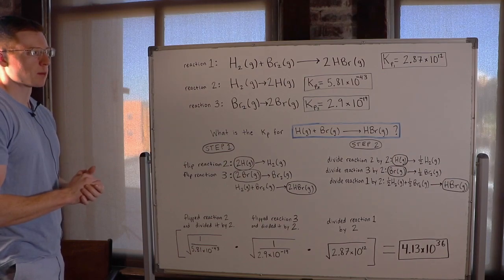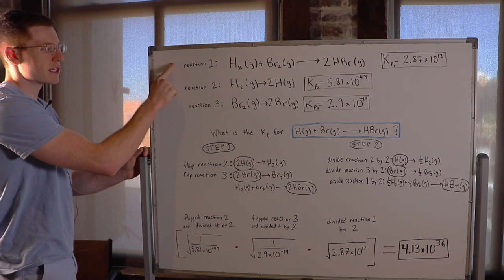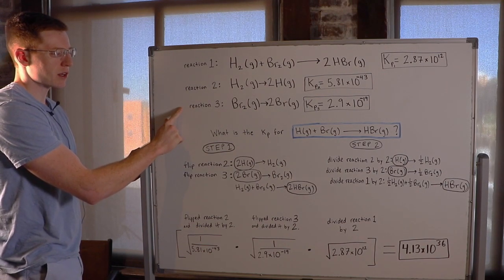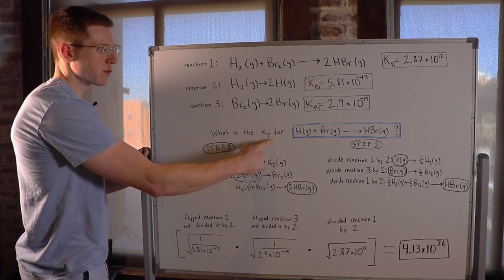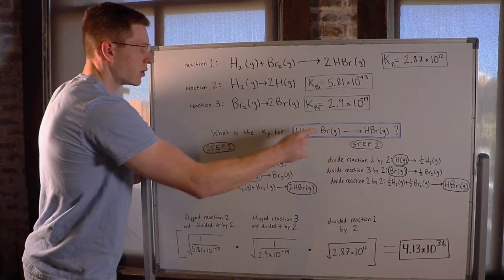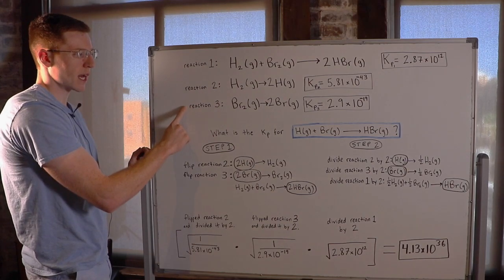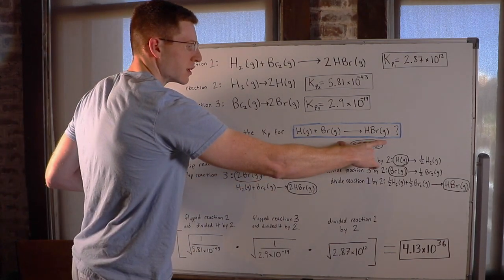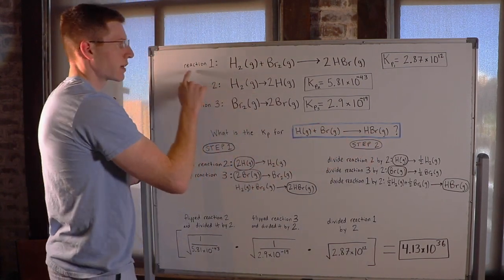So this is a common problem you may see. You're going to be given several reactions, and then they're going to ask what the K is for another reaction, and you have to somehow make these several reactions look like the reaction that they're interested in.